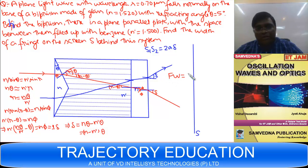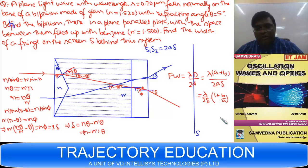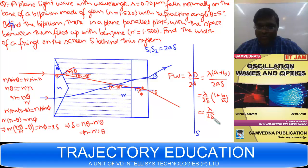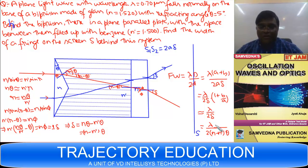The fringe width is λ(A+B) / 2Aδ, which equals λ/(2δ) · (1 + b/a). Since the light waves are coming parallel (plane wave), the source S must be at infinity, meaning A is infinite. So the fringe width simplifies to approximately λ / [2(N − N')θ]. Now substitute the given values to get the final answer.